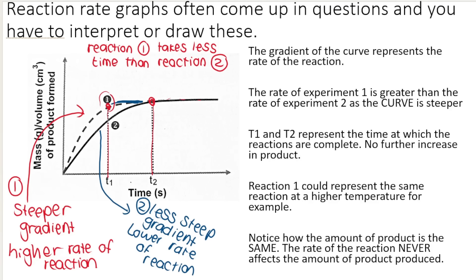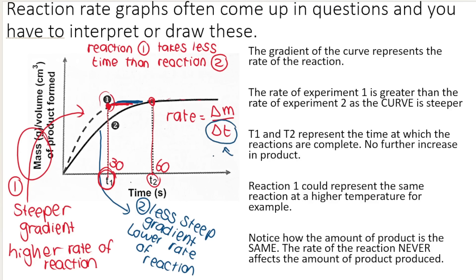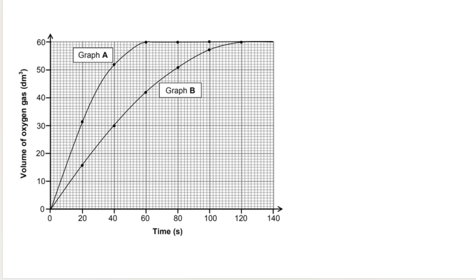Reaction one takes less time to complete than reaction two — it finishes after T1 seconds, maybe T1 is 30 and T2 is 60. Because reaction one levels out and reaches completion earlier, it has a higher rate of reaction. Remember, rate is measured as change in mass over change in time. Mathematically, the smaller your time is — say 30 seconds versus 60 — the bigger the rate will be. So the less time your reaction takes, the higher the rate of reaction.